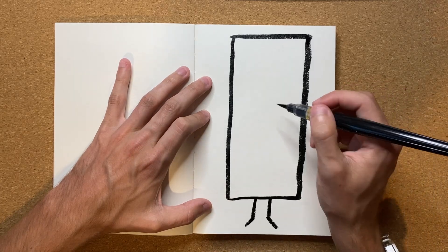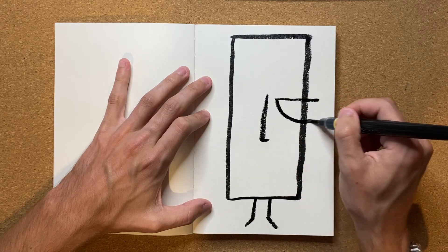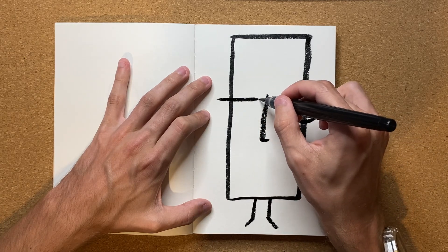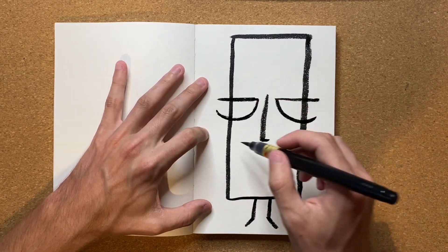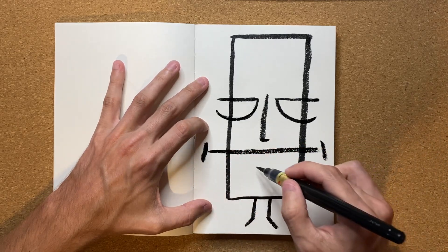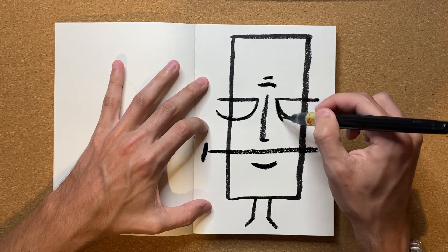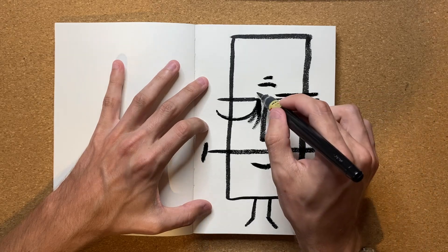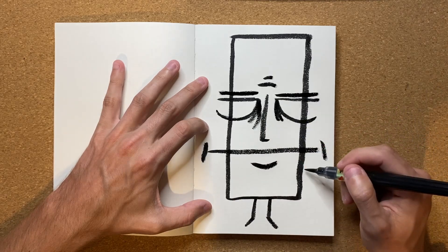And now I'm gonna go ahead and give it a nose and some eyes. Just like that. A mouth, a little bit of a chin, a little bit of forehead lines, some eyebrows, and of course some arms.